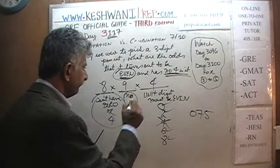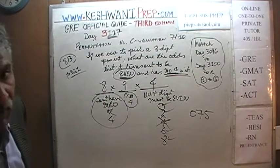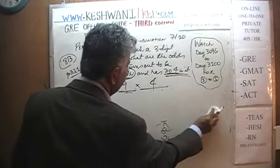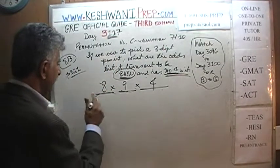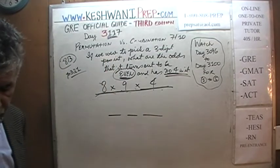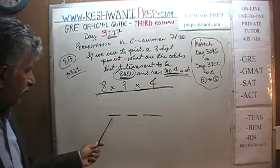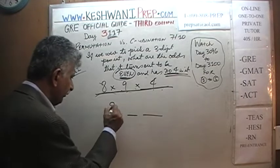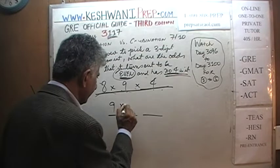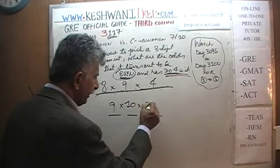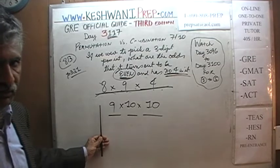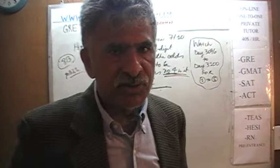So that's our numerator: 8 times 9 times 4. Now let's figure out the denominator. We have a three-digit number. How many different ways can we fill up the first spot? Nine ways — we can't have zero in the front. For the other two digits, there are ten choices each. So the total is 9 times 10 times 10, which equals 900. There are 900 three-digit positive integers.